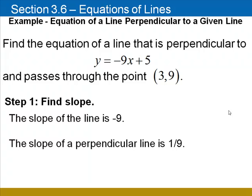So the slope of a perpendicular line will have the opposite sign, positive, and will be the reciprocal, 1/9. So now we need to find the equation of a line whose slope is 1/9 and passes through the point (3, 9).